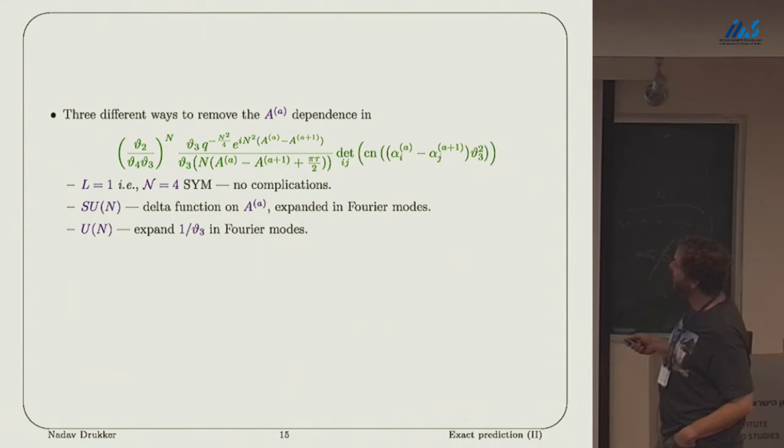There are three different ways to remove these A dependencies. Either I take N equals 4 super Yang-Mills, then A equals 1 cyclically identified with little A equals 2, this cancels. If I take SUN, the A's are 0, but then I need to put a delta function in my measure, which I will expand in Fourier modes. If we do UN, we can expand this function in Fourier modes. That's a bit nasty, and we didn't progress on that, but we do have a lot of results for a general circular quiver with SUN.